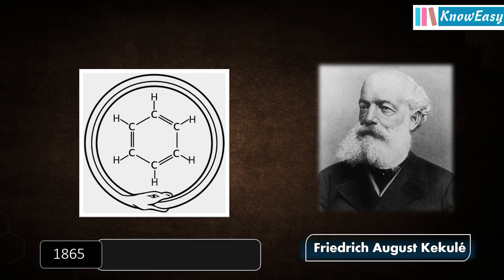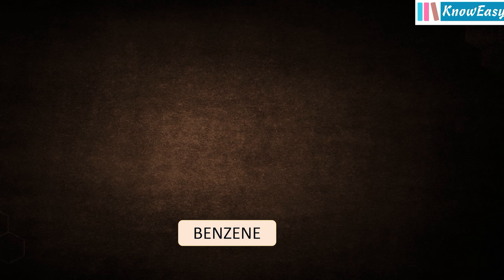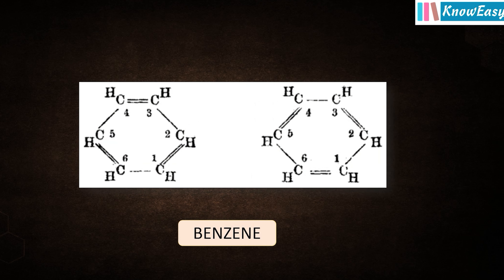The real breakthrough came from August Kekulé, a dreamer from Germany, in 1865. He is considered one of the founders of modern organic chemistry. In 1865, Kekulé had a famous dream in which a snake was holding its own tail. This dream inspired him to propose that benzene, C6H6, has a cyclic structure with alternating carbon-carbon single bonds and carbon-carbon double bonds present inside the ring. This concept revolutionized organic chemistry, establishing the concept of aromaticity and modern chemical bonding theory.